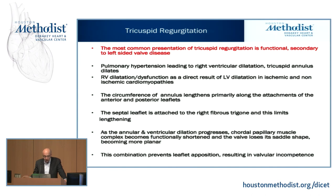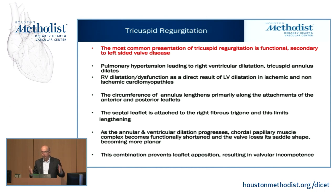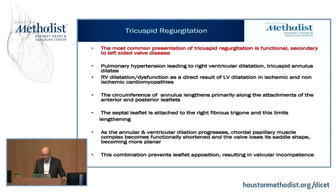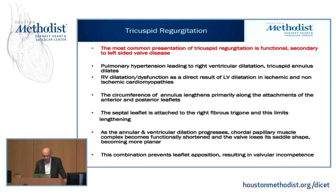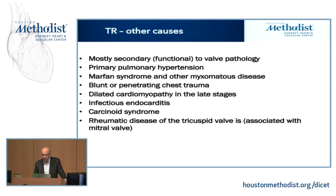The dilatation therefore occurs on the anterior and posterior sides, which are attached to the free wall of the right ventricle. As annular and ventricular dilatation progresses, the chordal papillary muscle complex becomes shortened and the valve loses its saddle shape — just like the mitral valve. You don't get proper leaflet apposition; you get a dilated, flattened valve resulting in a degree of valvular incompetence.